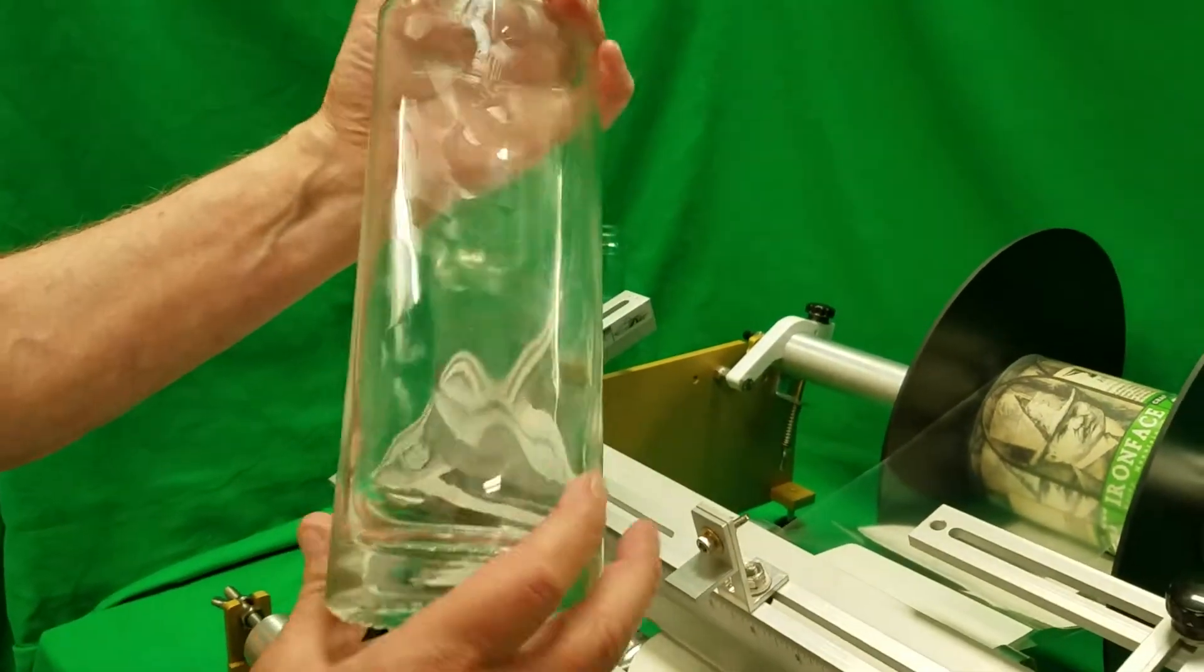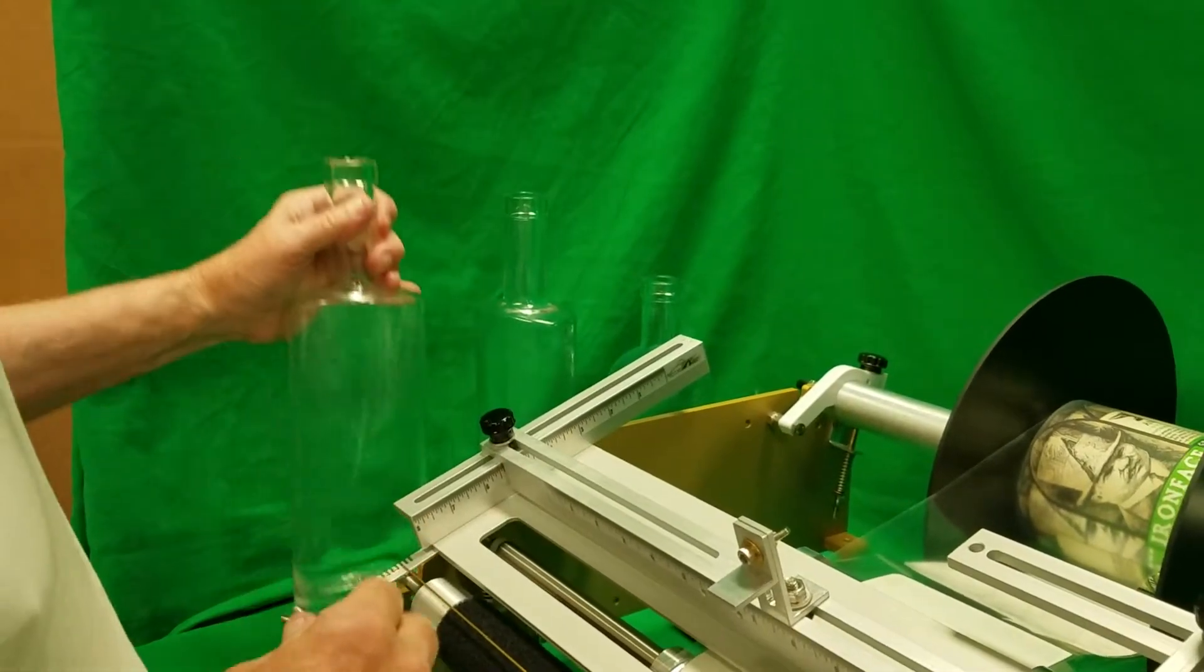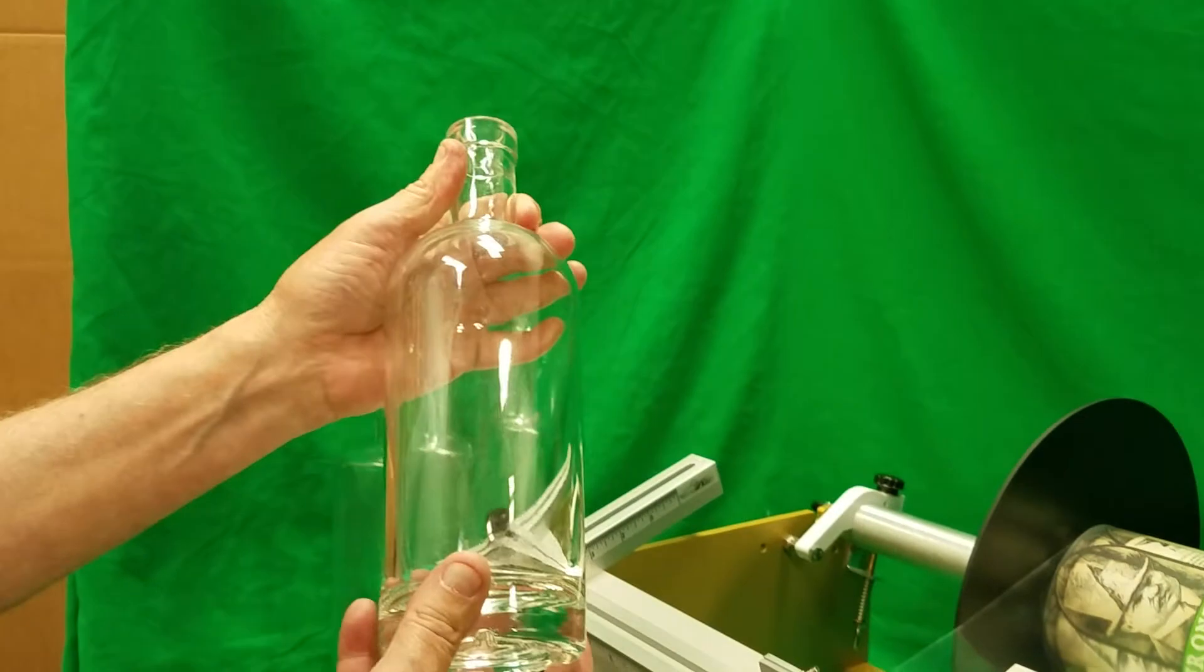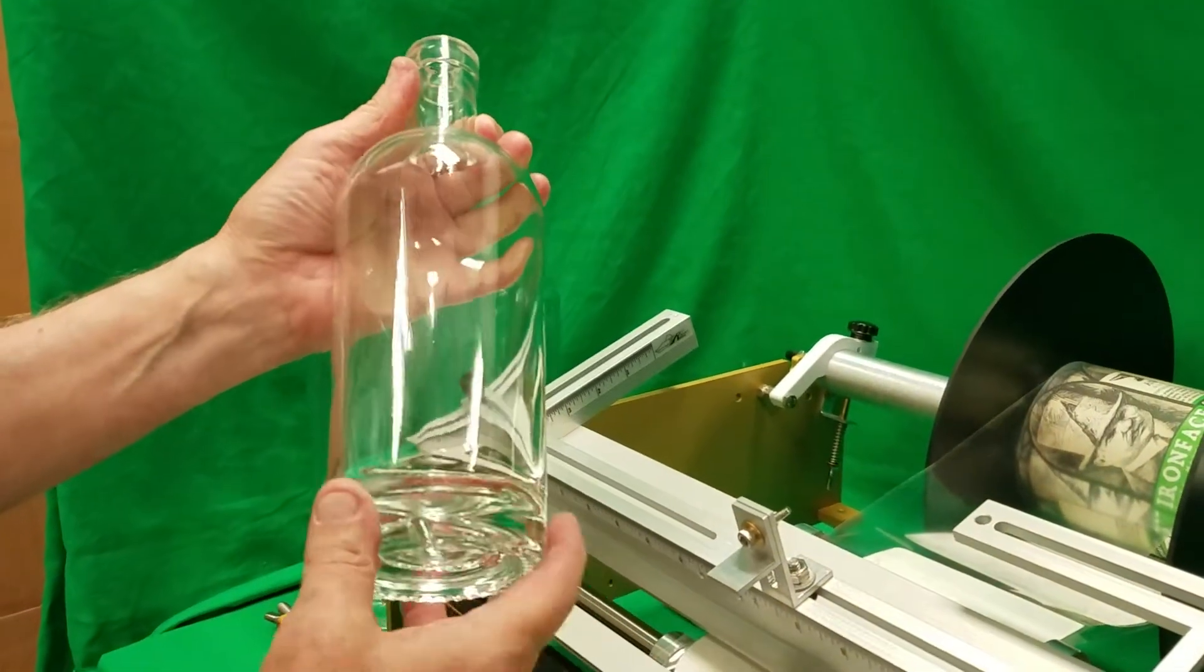What we're going to be applying labels to is this real tall oval bottle. The same machine is going to be used to apply labels to this tapered round bottle.